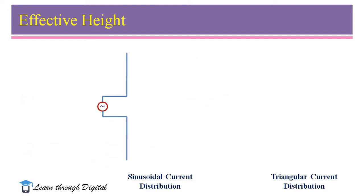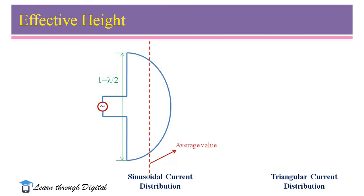Next, I will explain the calculation of effective height based on current distribution. I am considering two examples. In the first example, I consider a dipole antenna with a length of lambda by 2 with sinusoidal current distribution. The average value of the sine wave is 0.64. Therefore, the effective height is equal to the average value multiplied by the physical length, that is 0.64 multiplied by L, where L is the physical length of the antenna.